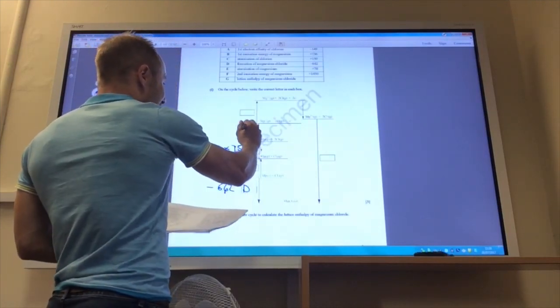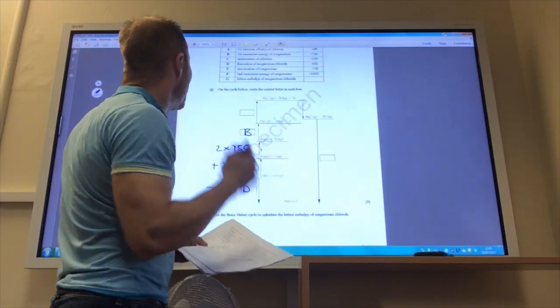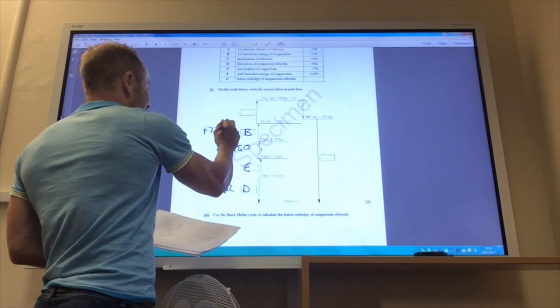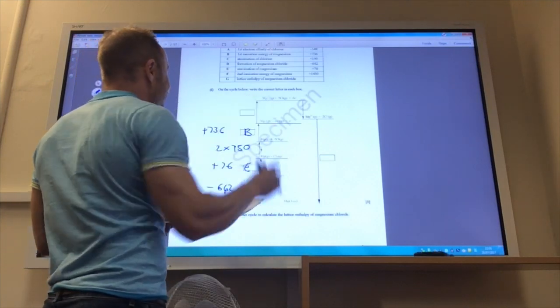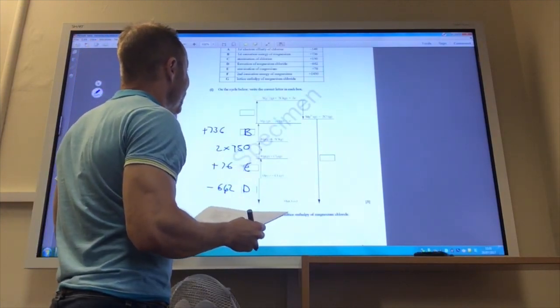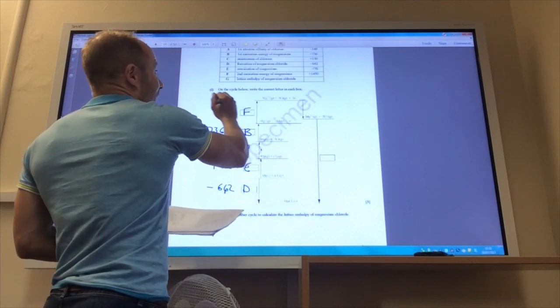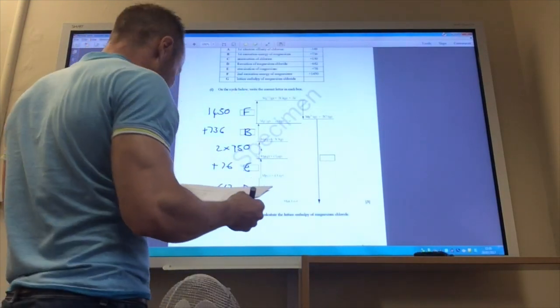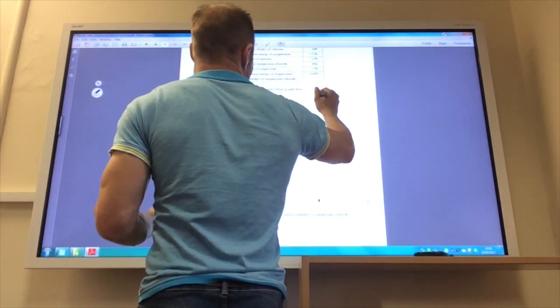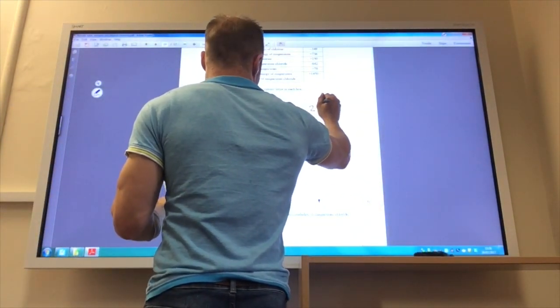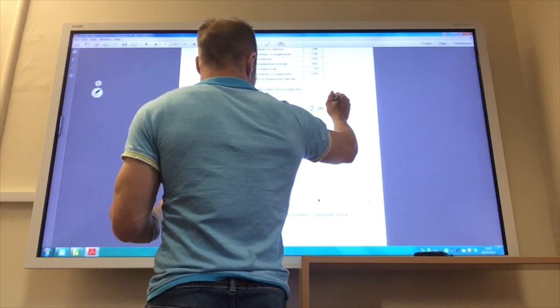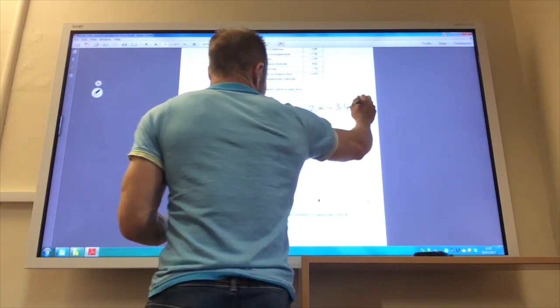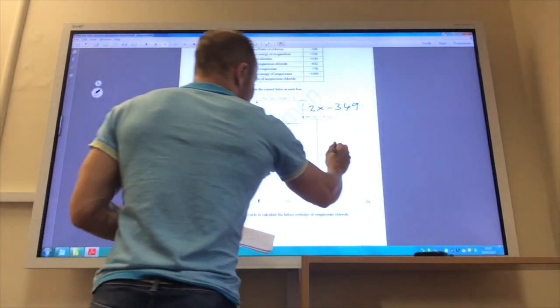This is going to be B, which is the first ionisation energy of magnesium, so that's plus 736. This next one is the second ionisation energy of magnesium, so that's F, and that is 1450. This one here is the electron affinity of chlorine. Remember, I've got two chlorine atoms, so that's 2 times 349.